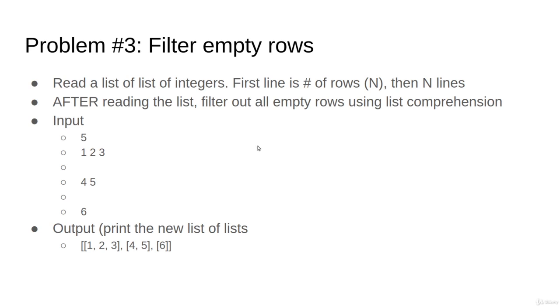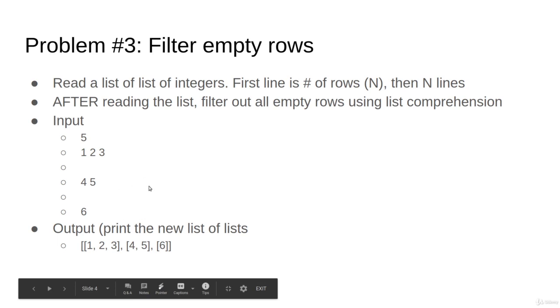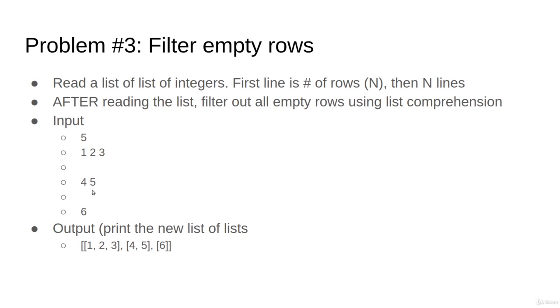Filter empty rows. I would like you to read a list of integers. This will not be a matrix. First line is number of rows, then N lines. After that, I would like to filter out all empty rows using list comprehension. For example, if you read five for five rows, this is row number one, row number two, number three, then this is output. Do not filter it during the reading. Imagine you would like to write a function that takes a list of lists and uses list comprehension to filter it.